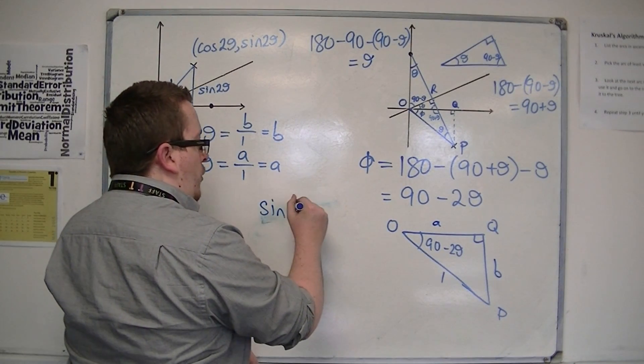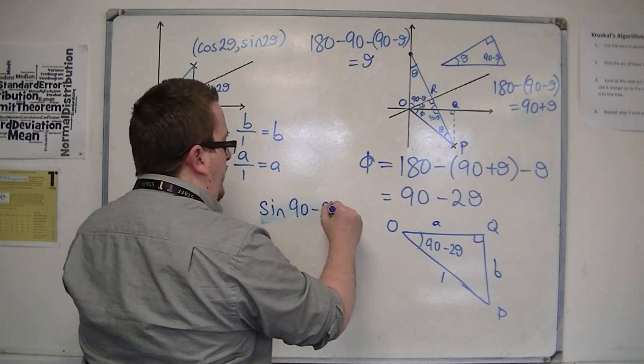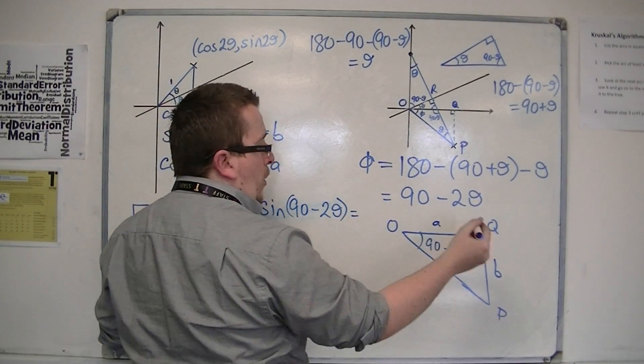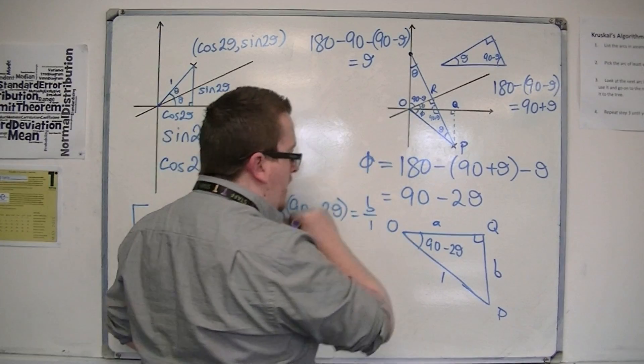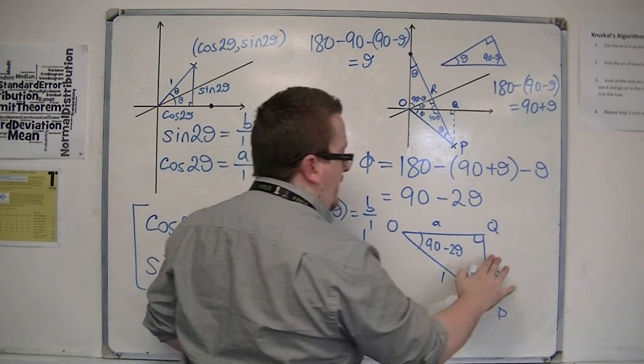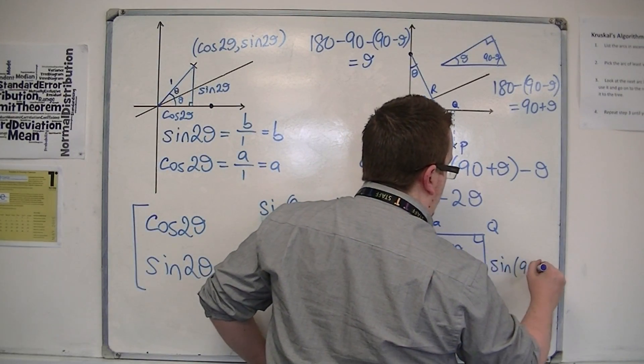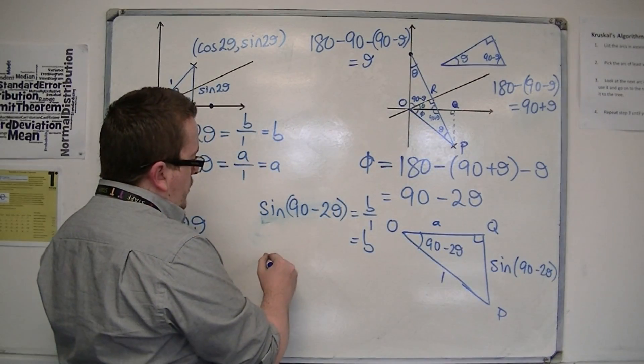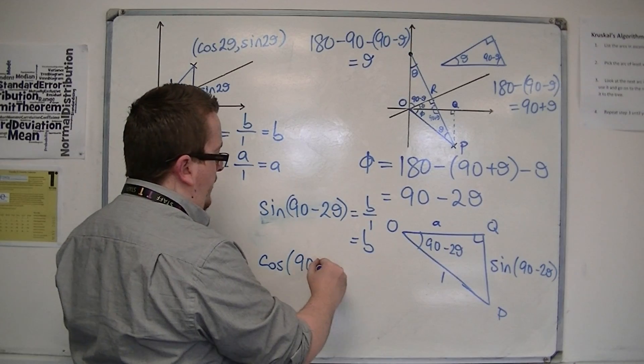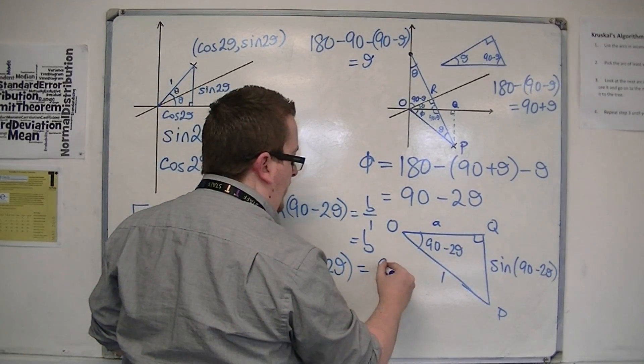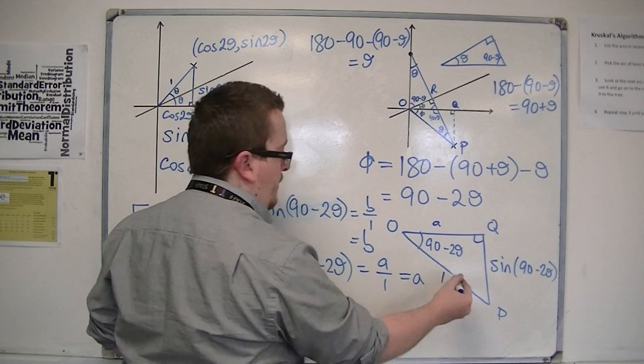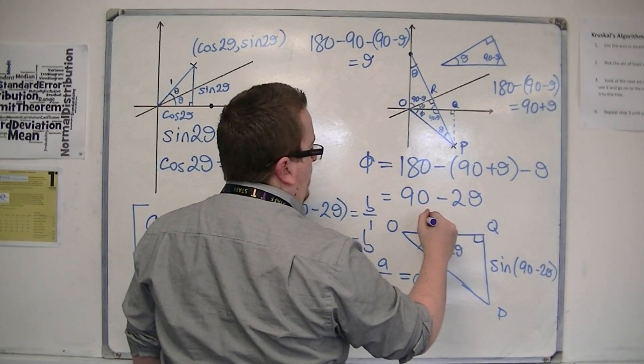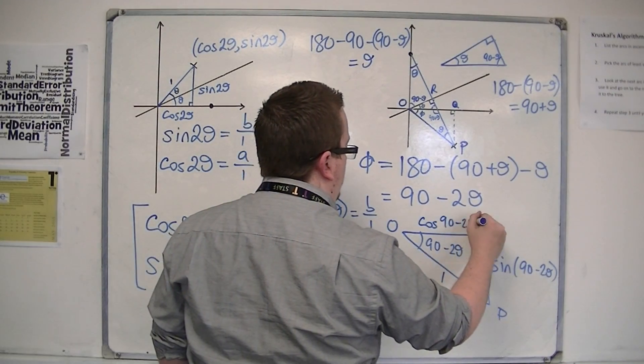What I can say is that if this is A and that's B, then sine of 90 minus 2 theta is equal to the opposite B over 1, so that's just B. So that's sine of 90 minus 2 theta. And then cos of 90 minus 2 theta is equal to the adjacent over the hypotenuse, which is just A. So that means that that length is cos of 90 minus 2 theta.